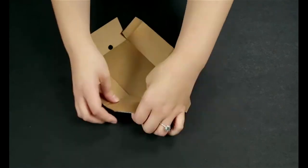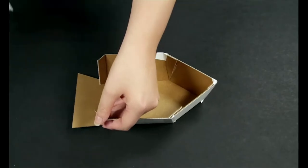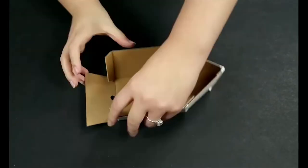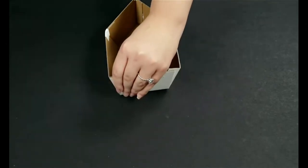Make all the folds on Part A. Glue and tape the sides of Part A to form the hull of the boat.